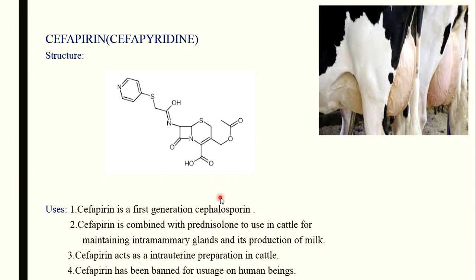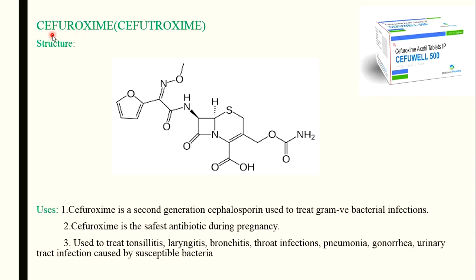Cefuroxime — a clue to remember the structure is 'furo,' indicating a furan group is present in the side chain. The cepham group is as usual. At the third position, a CH₂–O–CO–NH₂ side chain is present. At the amide position, there is a C=N cyanide group and an O–CH₃ methoxy group attached to the cyanide group, which is then attached to the furan group.